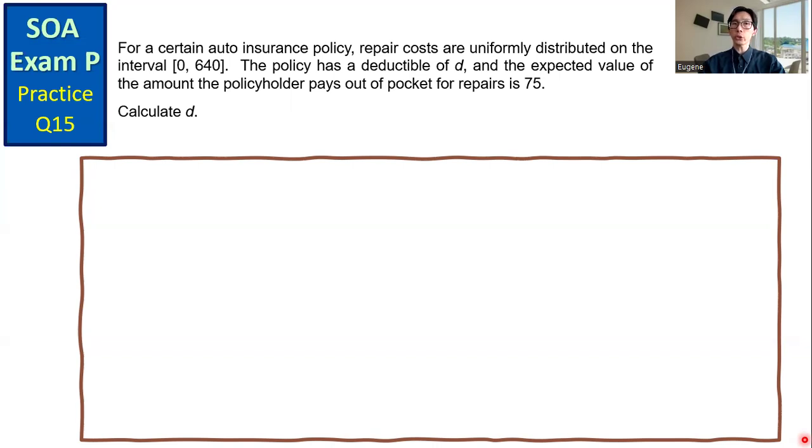Let's take a look at the solution. Let X be the repair cost. Repair costs are uniformly distributed on the interval [0, 640]. Therefore, the PDF of X is 1/640 for X between 0 and 640.